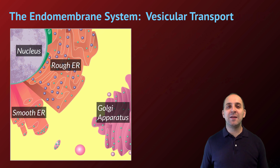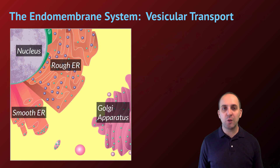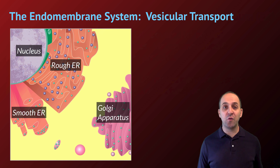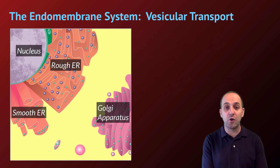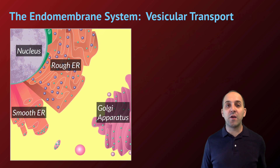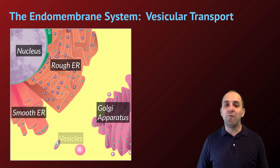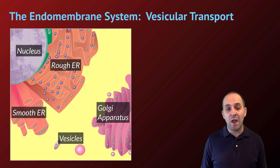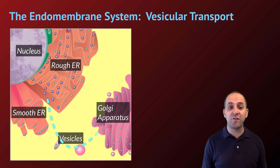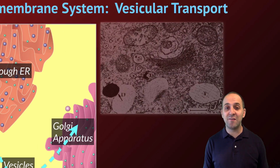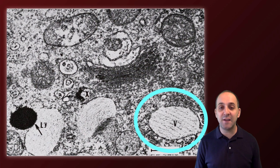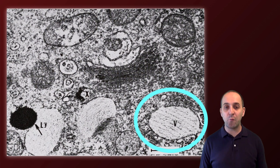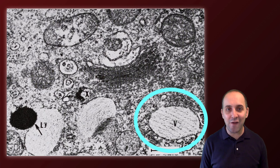The nuclear membrane is actually contiguous with the endoplasmic reticulum — they're connected inside of the cell. But to move from the endoplasmic reticulum to the next organelle, the Golgi apparatus, substances need to travel through what we call vesicles. Vesicles are simply compartments of membrane that bud off from the endoplasmic reticulum and move throughout the cell, fusing with other structures. In this scanning electron micrograph you can see a vesicle marked with a V at the bottom right.